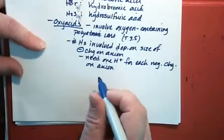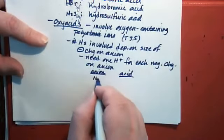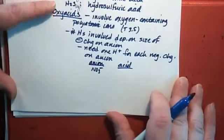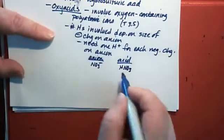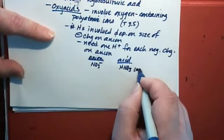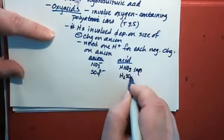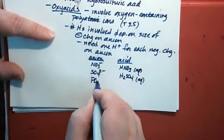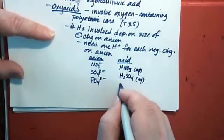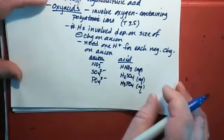If you have an acid involving the anion nitrate, NO3 minus, the formula for the acid would be HNO3, because you only need one H plus because the anion is only negative 1. If you have the sulfate ion, the equivalent acid is H2SO4, because you need two H pluses to cancel out the minus 2 on the ion. If you have the phosphate ion, which is PO4 minus 3, then you need three H pluses.